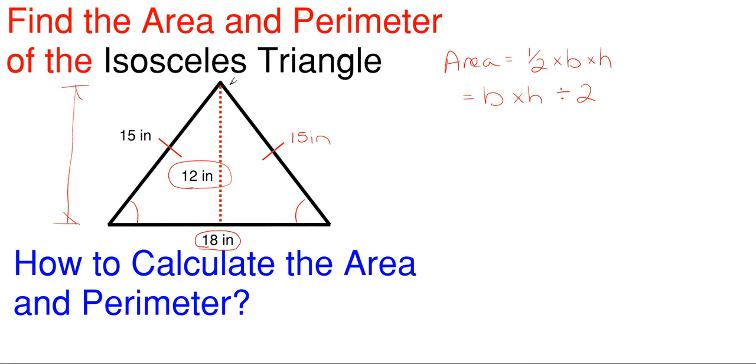The 15 inches on each side just denotes how long that slanted side is. So our base is 18 inches times a height of 12 inches, divided by two for our area of this triangle. This gives us 108 inches squared.